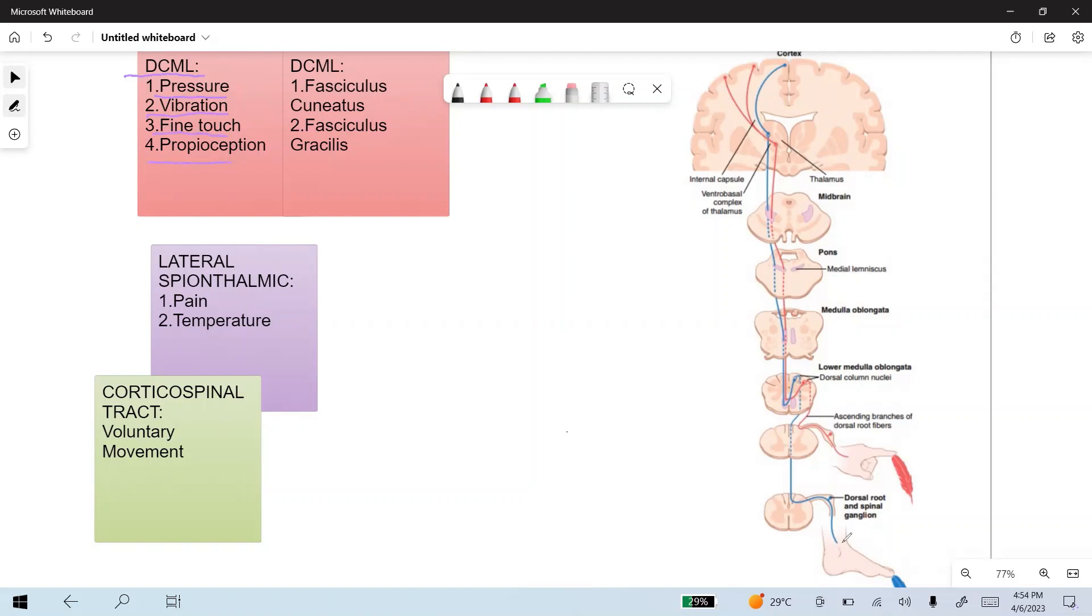The receptors present on the surface of the skin or beneath the skin carry that sensory sensation, like this is the lower limb. These sensations enter the spinal cord through the dorsal root ganglion, and the first-order neuron cell body lies in the dorsal root ganglion.